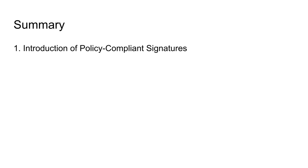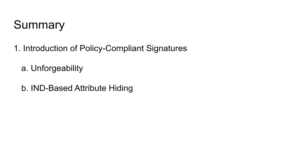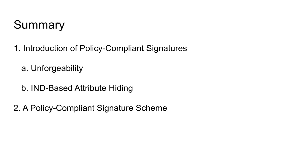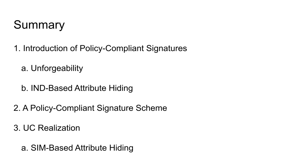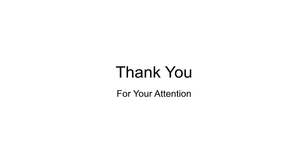To summarize, in this talk we have introduced the notion of policy-compliant signatures together with the corresponding notions of unforgeability and indistinguishability-based attribute hiding. Furthermore, we presented a policy-compliant signature scheme based on digital signatures, non-interactive zero-knowledge proofs, and predicate encryption that achieves unforgeability and indistinguishability-based attribute hiding. In the last step, we also gave a UC formulation of our notion and presented the corresponding simulation-based notion of attribute hiding needed to realize our UC formulation. Thank you very much for listening.